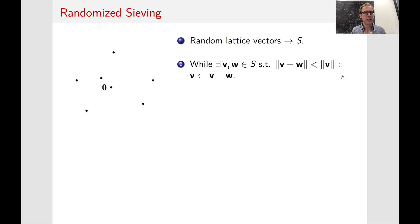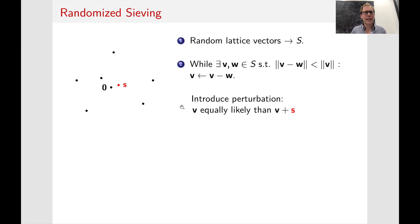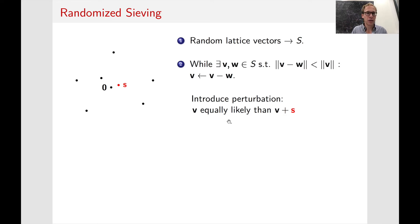The ingenious idea of Ajtai, Kumar, and Sivakumar to show correctness was to introduce perturbation. We want to argue that at any stage, the lattice vector V being in our set is equally likely as V plus S — where S is typically the shortest lattice vector. If this holds during the second stage, it's unlikely to only end up with zero, because it's equally likely to end up with S instead, which is the vector that interests us.